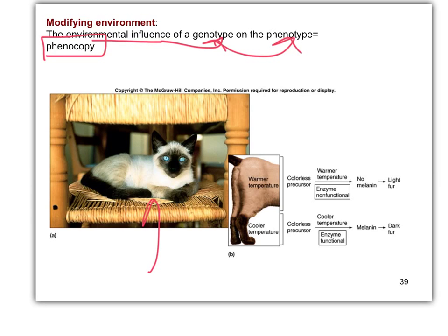In the Siamese cat, wherever there are cooler temperatures is where we get the dark color. The biochemical pathway is: you have a colorless precursor molecule that must be turned into real melanin in order to get fur color. So if the enzyme is not functional where it's warm on the body, you get no color — light fur. But if the enzyme is functional at cooler temperatures, like in the feet, the tail, the ears, around the face, the precursor is converted to melanin, which is a pigment that reflects dark — essentially black — resulting in dark fur.